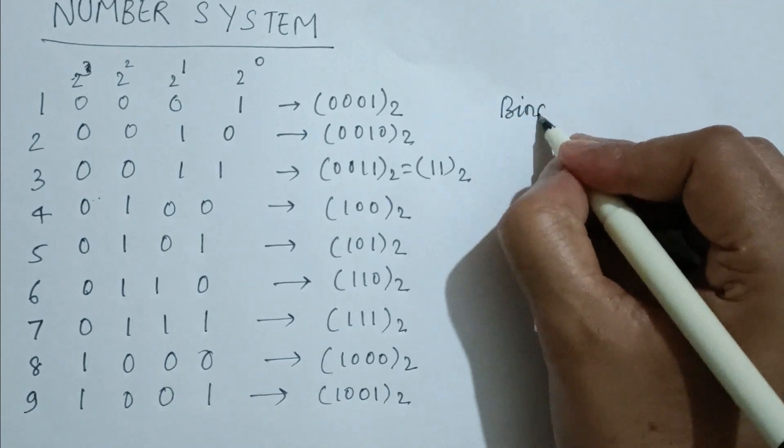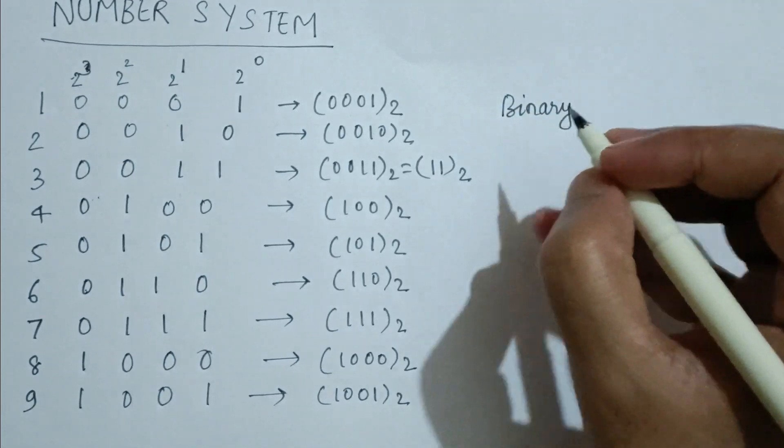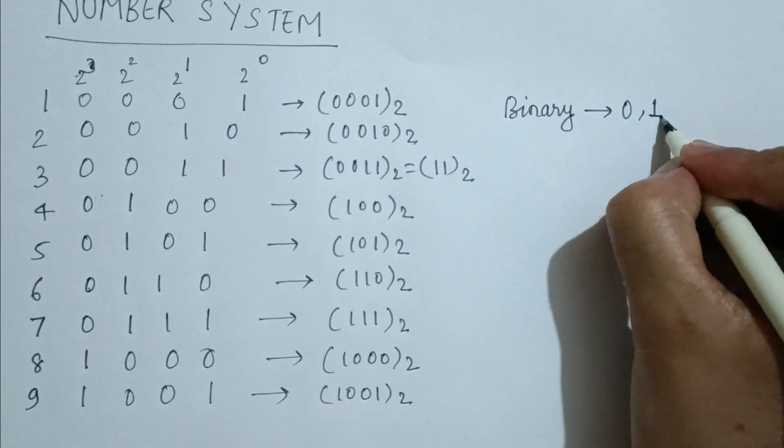We represent binary numbers using digits 0 and 1. The base or radix of binary number is 2.